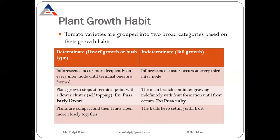In case of indeterminate, the main branch continues to grow indefinitely with fruit formation until frost occurs. So in indeterminate, the main branch continues to grow and it stops only when there is frost in the atmosphere. Only at that time will the main branch stop its growth; otherwise it will continue to grow.